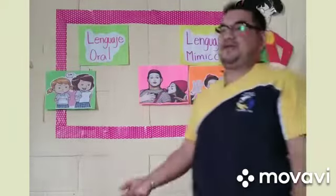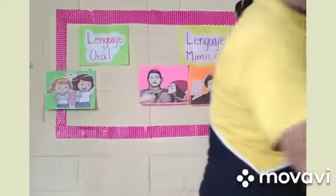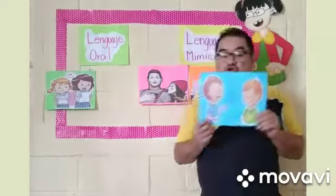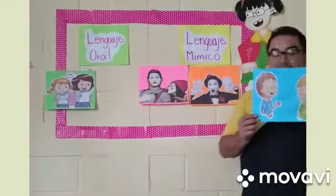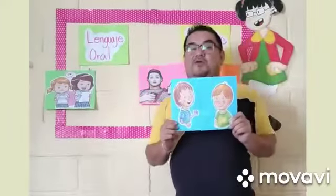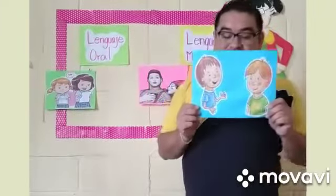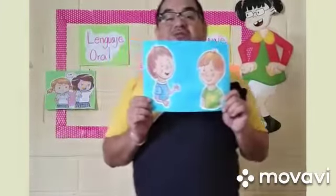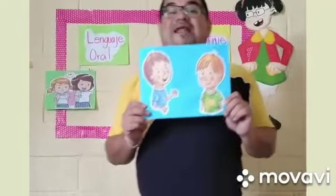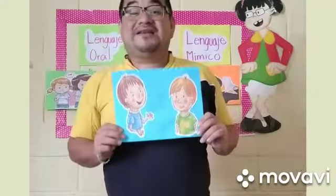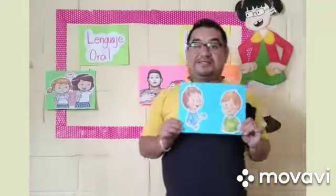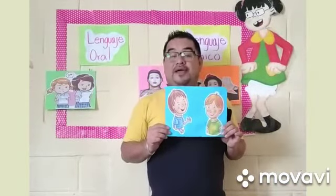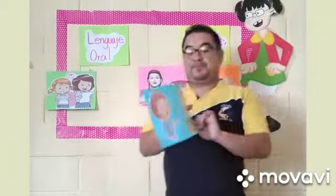Vamos a clasificar otra imagen que tenemos acá. Tenemos dos chicos, dos amiguitos, como cualquiera de ustedes. Ellos están comunicando uno con el otro y si nos damos cuenta, se nota la cara de felicidad de ellos porque sí está existiendo una comunicación entre cada uno de ellos.